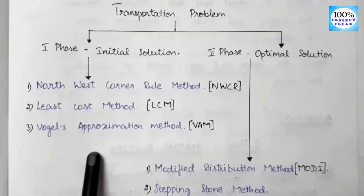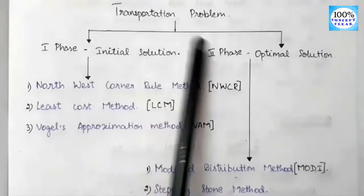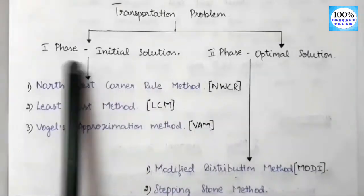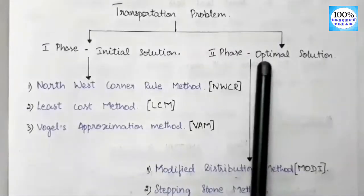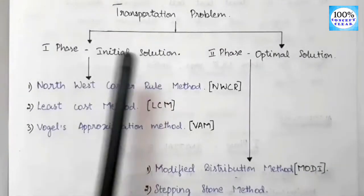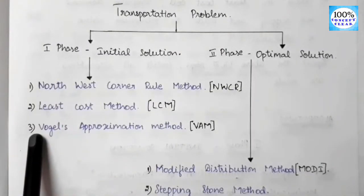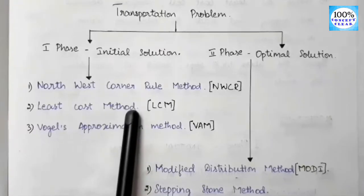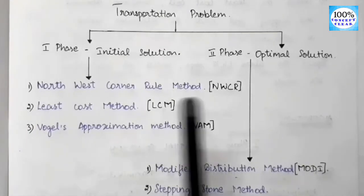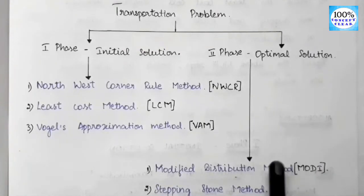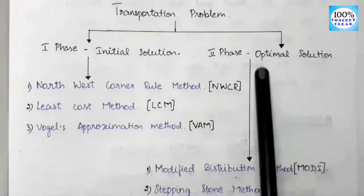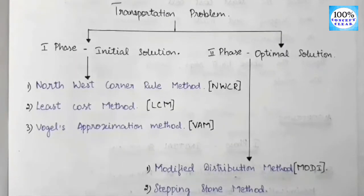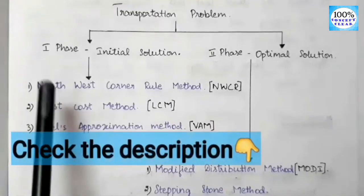Next, we look at the methods of the transportation problem. There are two phases. The first phase is the initial solution, which has three methods: the North-West Corner Rule method, the Least Cost method, and Vogel's Approximation Method. The second phase is the optimum solution, which has two methods: the Modified Distribution method (MODI method) and the Stepping Stone method.